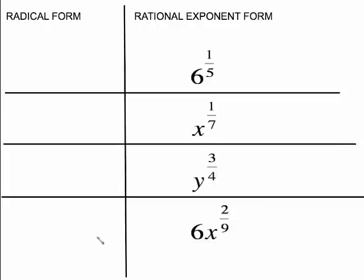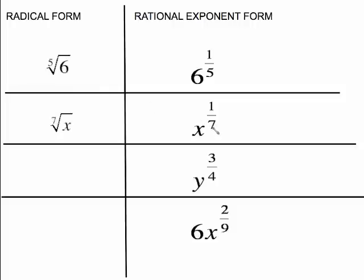Let's work the other direction — we have a rational exponent and we want to go backwards to radical form. For 6 to the 1/5: that 5 is going to be the index, and the 1 is the power on the inside. It becomes the fifth root of 6 to the first, but there's no reason to write the first. Here, the 7 on the bottom is your index and x to the first is on the inside.